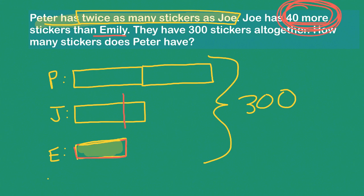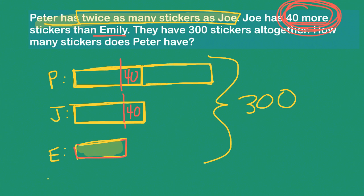That means I can take a little marker here and show that Joe has 40 more than Emily right there. Now, remember that Joe's block and a Peter block are identical — these two are identical. That means where I drew a little 40 on Joe's, I can do the same thing on a Peter block because it's identical. This first Peter block is identical, and this second Peter block is also identical, so I can do that same thing there.